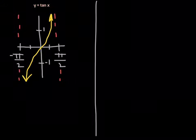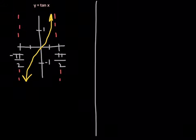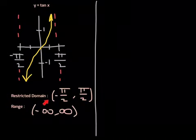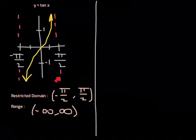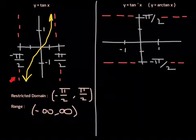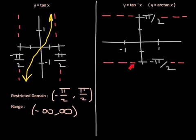Moving on to tangent of x. If we restrict the domain for tangent to be just between negative pi over 2 and positive pi over 2, then we will have a graph that passes the horizontal line test and is one-to-one with an inverse function. So let's restrict the domain for tangent to be negative pi over 2 to positive pi over 2. The range is of course all real numbers. Note that the endpoints use parentheses because that's where the vertical asymptotes are located.